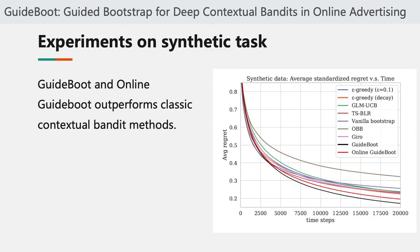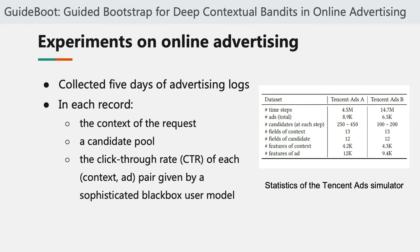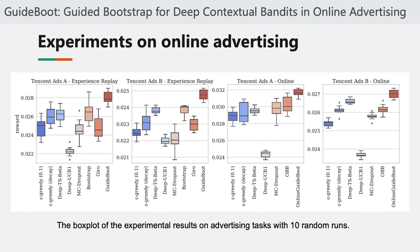To show the effectiveness of GuideBoost, we provide two sets of experiments. The first set is on synthetic tasks, where GuideBoost and online GuideBoost both outperform classic contextual bandit methods. In the second set, we collected five days of advertising logs from Tencent's real environment, where each record provides the context of the request, a candidate pool, and the click-through rate of each context-ad pair given by a sophisticated black-box user model. The results show that GuideBoost and online GuideBoost outperform previous methods by a large margin.